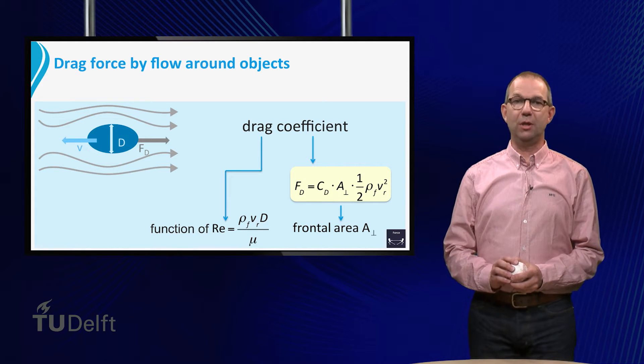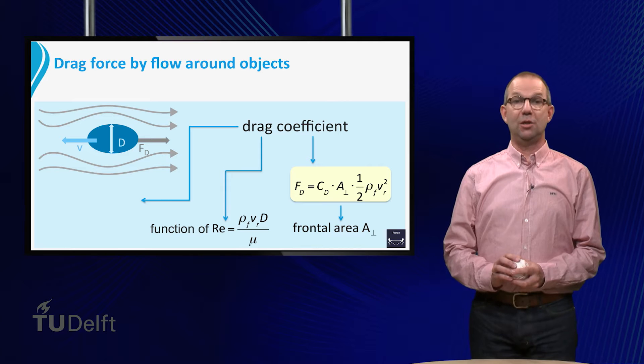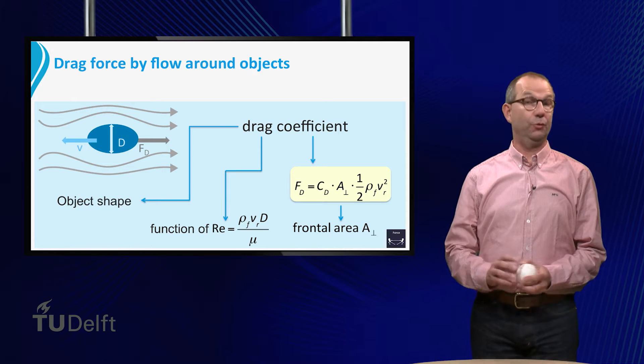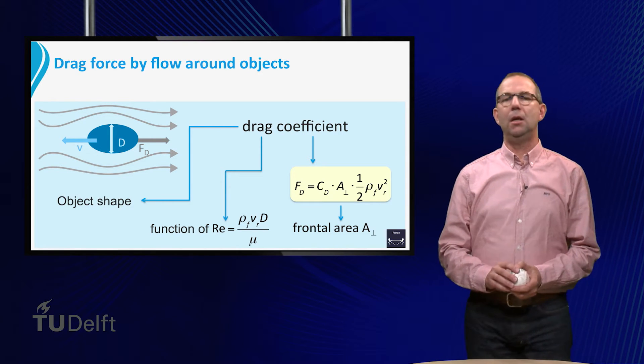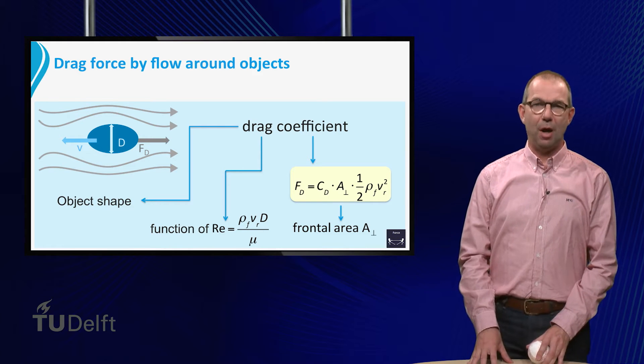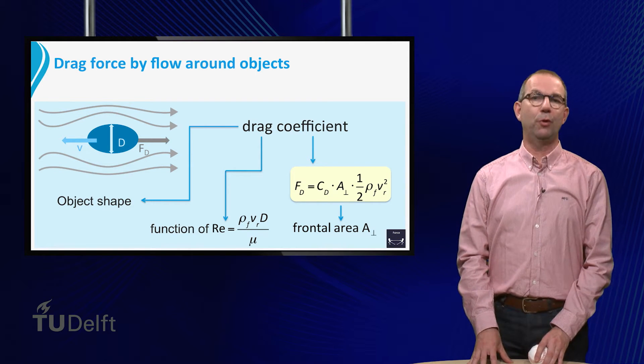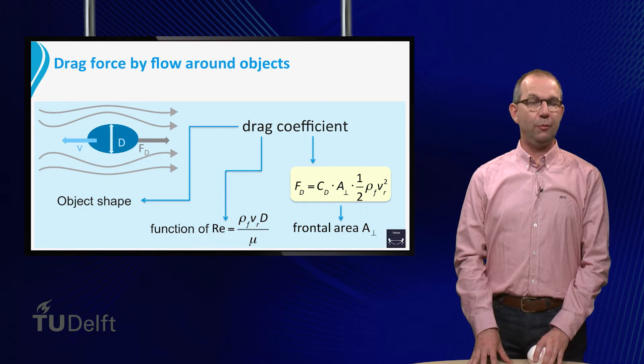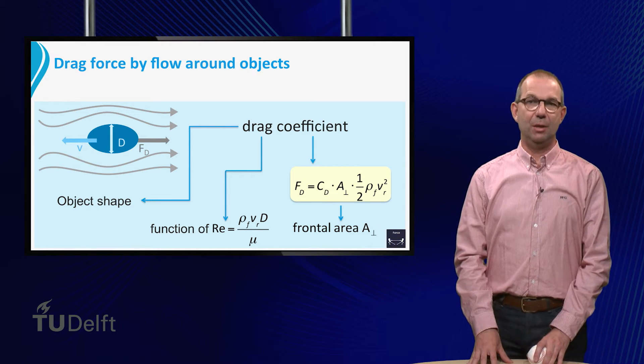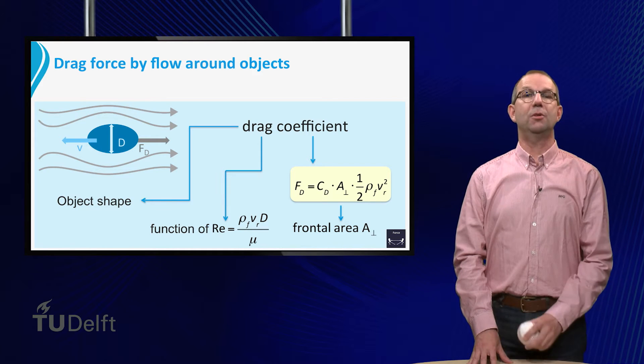CD depends not only on the Reynolds number. It is also different for objects of different shapes. It is virtually impossible to find CD by deriving analytical solutions from the flow equations. Only for low Reynolds numbers and simple shapes like a sphere is this possible.